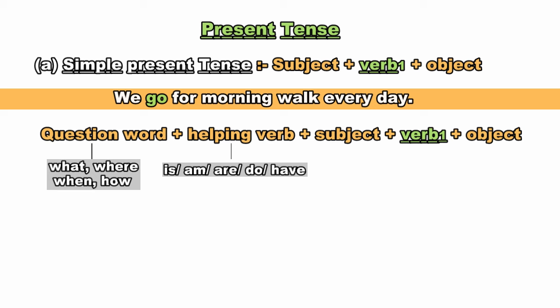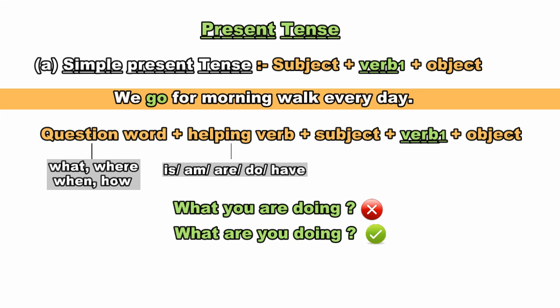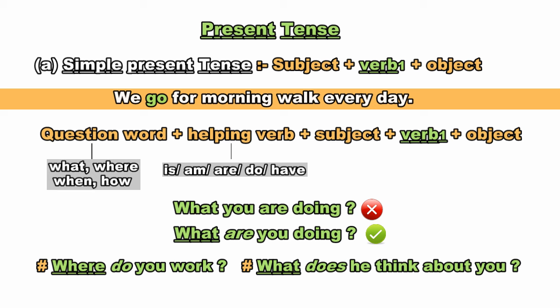For example, 'What you are doing' is incorrect. If we want to ask a question, we should say 'What are you doing.' Yani 'what' ke baad helping verb ka use karna chahiye, jaise structure mein hai. Question framing ka use hume direct-indirect narration mein bhi padega, isliye ise dhyan se dekhna chahiye. Sabhi question forms mein question word ke baad helping verb aata hai — jaise 'Where do you work?', 'What does he think about you?'